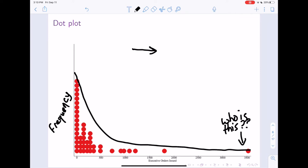It moves to the right so that the tail, the tail extends to the right. Because the tail extends to the right, we would call this right skewed. We would call this right skewed.